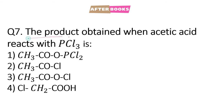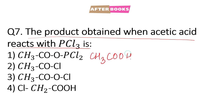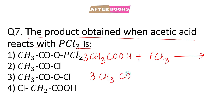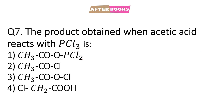Question number 7: the product obtained when acetic acid reacts with PCl3. Acetic acid, CH3COOH, reaction karwa raha hai with PCl3. Toh yahan pe kya form hoga — is ke 3 molecules lenge, toh yahan pe form ho jayega CH3COCl along with H3PO3. Yahan pe phosphorous ki oxidation state is +3 aur yahan pe bhi +3 — so the correct option is option number 2.